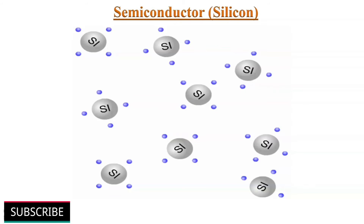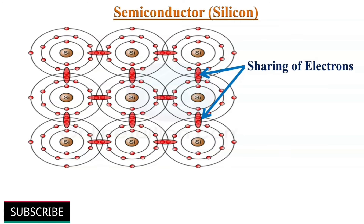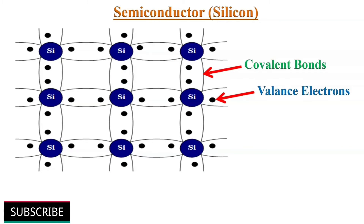When silicon atoms come close to each other to form a solid, they share their valence electrons and arrange in a crystal-like structure. Each silicon atom shares 4 valence electrons with 4 neighboring atoms, and those 4 neighboring atoms each share one valence electron back with this atom. Therefore, each silicon atom effectively has a total of 8 valence electrons, and by sharing valence electrons, silicon atoms form covalent bonds.